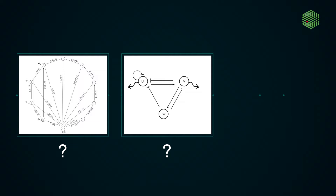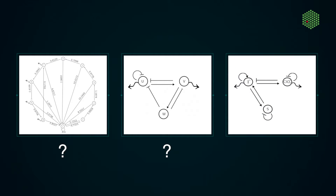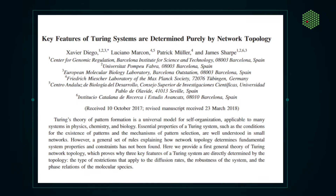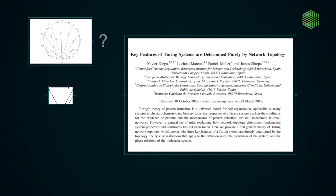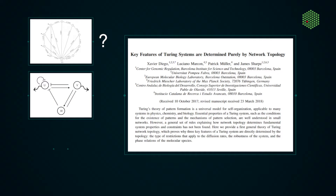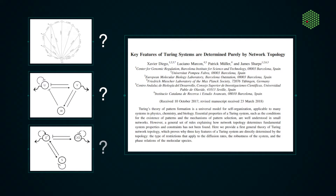It has been a challenge to design more general networks because of the lack of a theory that can guide the systematic construction of robust, realistic Turing systems. Our new theory tells us whether a system is capable of creating Turing patterns by studying the feedback between the system's components — no longer via trial and error, but straight from the theory itself.